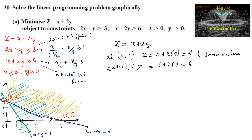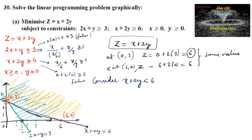Since both corner points give the same value, we need to check whether there is a solution with z less than 6. We consider the inequality x + 2y < 6, whose graph passes through (6, 0) and (0, 3) — the same as the second constraint line.